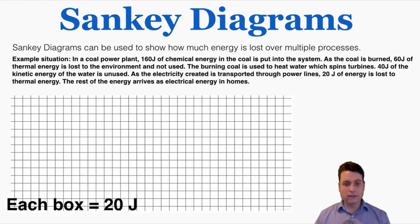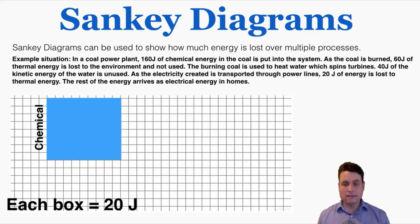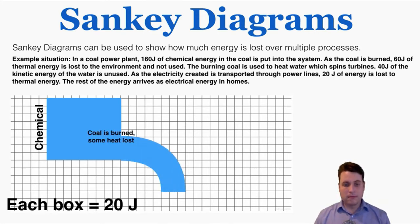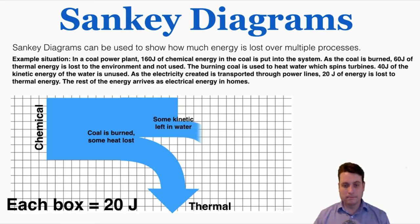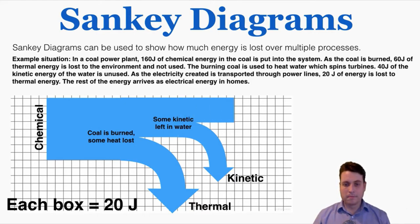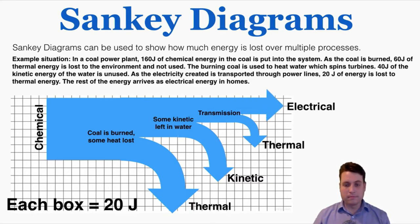Each box is 20 joules, so the rectangle is 8 boxes high for 160 joules, with chemical energy going in because coal contains chemical energy. Coal is burned and some heat is lost — that arrow is exactly 3 boxes long for 60 joules of thermal energy lost. The rest stays as good energy. Later, 40 joules of kinetic energy is lost to water, shown as an arrow 2 boxes wide for 40 joules. The rest stays in the system. Finally, 20 joules is lost to thermal energy in transmission, and the remaining energy arrives as electrical energy in homes. This more complicated Sankey diagram still does a good job showing the proportion of energy lost at each point versus the useful energy we end up getting out.